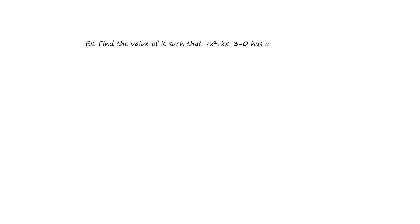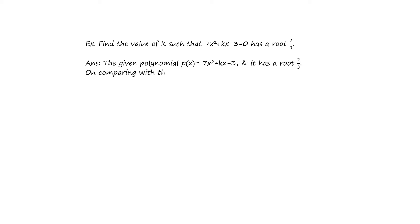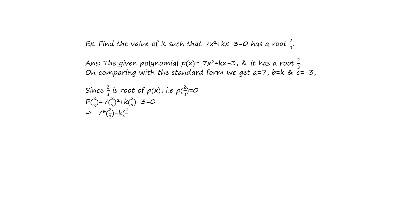Let's see another example. Find the value of k such that 7x² + kx - 3 has a root 2/3. The given equation is 7x² + kx - 3, and one root is given as 2/3. On comparing with the standard form we get a = 7, b = k, and c = -3. Since 2/3 is a root of p(x), we can write p(2/3) = 0. That means putting 2/3 in place of x: p(2/3) = 7(2/3)² + k(2/3) - 3 = 0, and on solving we get k = -1/6.